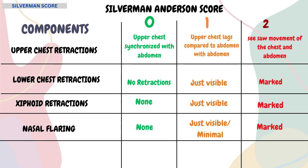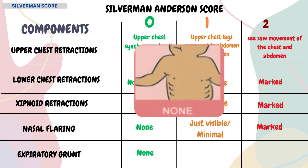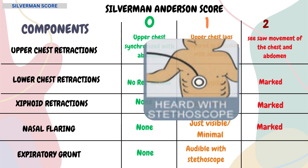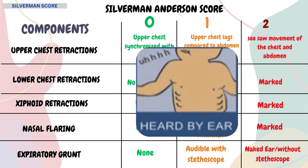The last component is expiratory grunting. If there is no evidence of an expiratory grunt, a score of 0 is given. If the expiratory grunt is audible with a stethoscope, a score of 1 is given. If the expiratory grunt is audible to the naked ear without a stethoscope, a score of 2 is given.